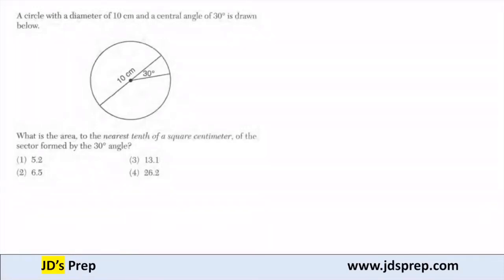Hello, welcome to JD's Prep. In this question we have a circle with a diameter of 10 centimeters and a central angle of 30 degrees, which is drawn below.